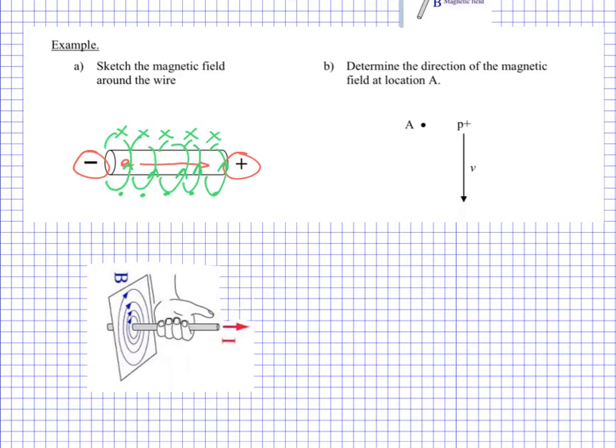Okay, in the second one, B over here, this time we have a proton moving. So this is the proton, a positive charge. This is the velocity, it's moving here. We need to think about what the direction of the magnetic field would be at this position here.